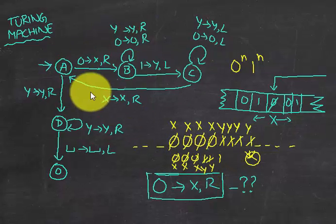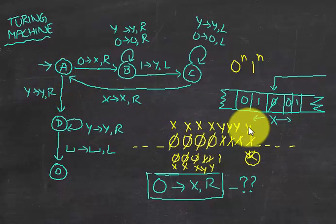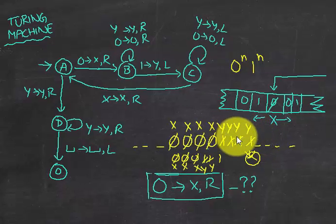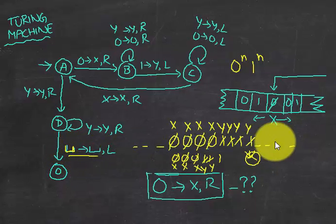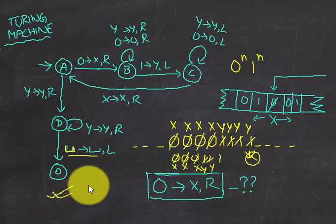This loop continues as long as there is input present in the string. When we see that we're at the last Y, we move right, and if there are no other Y's we go to a blank space. Whenever we see a blank space we do nothing — blank converts to blank, meaning no change — and then move to the left and the Turing machine accepts. Let's look at a more complicated example.